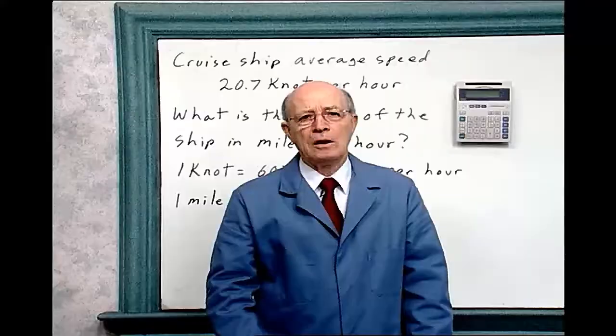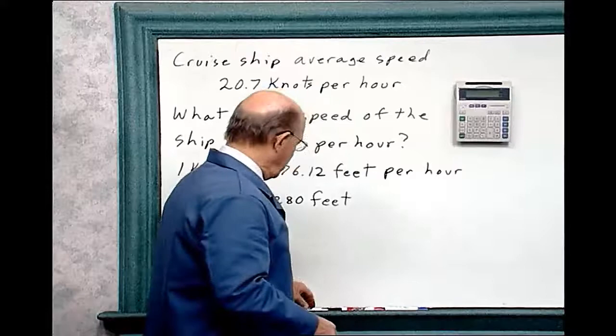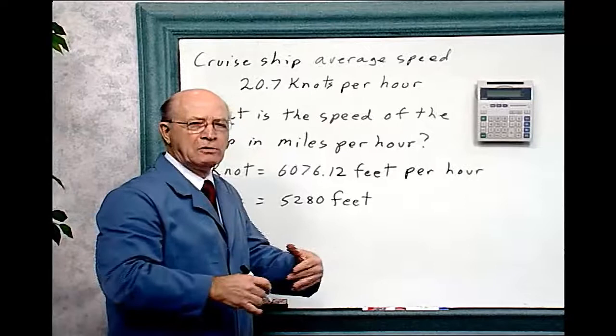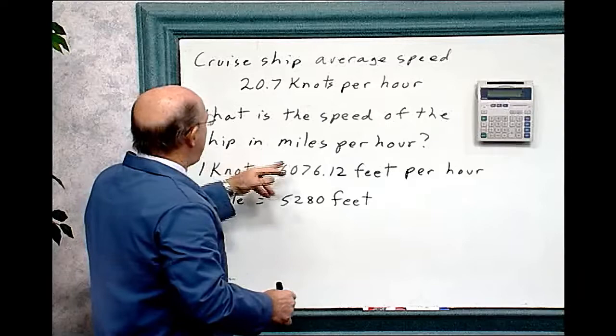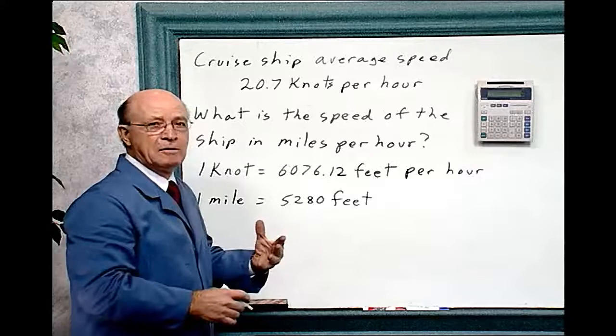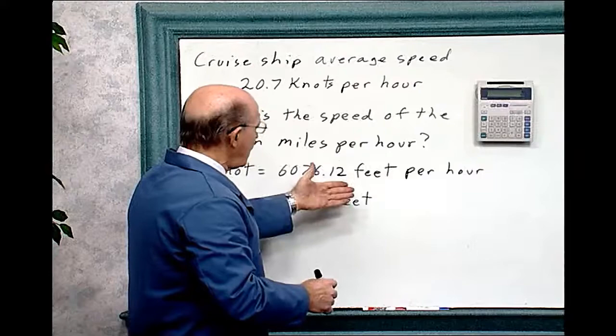The average speed of the cruise ship is 20.7 knots per hour. And that's what boats - they don't say they go so many miles per hour. Boats travel how many knots per hour? And the question is, what is the speed of the ship in miles per hour? Now, I got what one knot is in feet. I could have done it in miles per hour instead of feet, but I didn't.